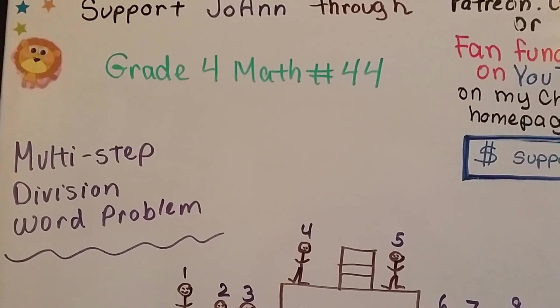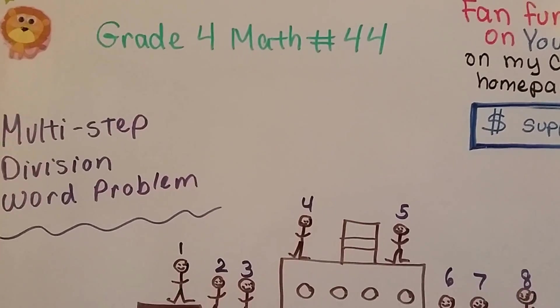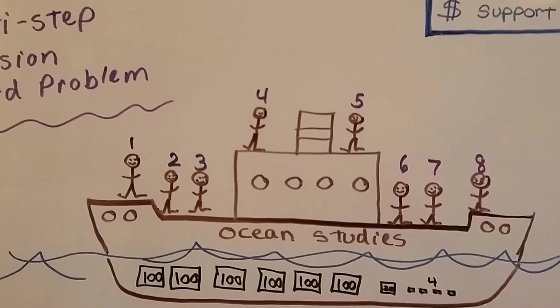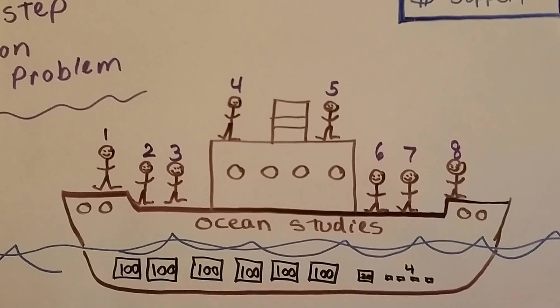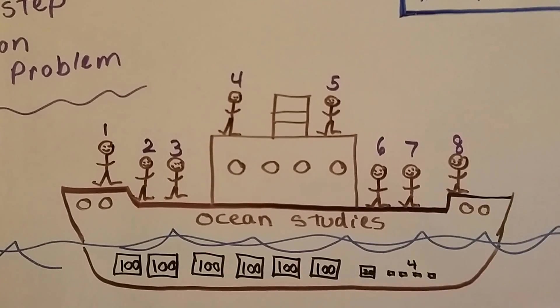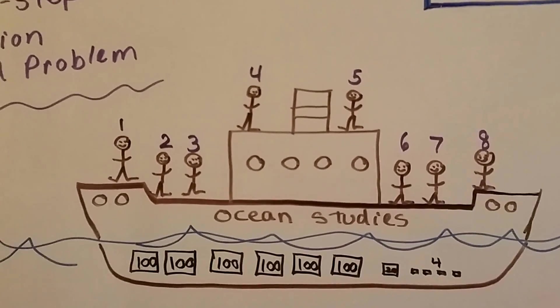Grade 4 math number 44, multi-step division word problem. And take a look at this. We've got a bunch of biologists, there's eight of them, and they're on a ship. And they're going to go out to sea and do some ocean studies of fish and the plants.